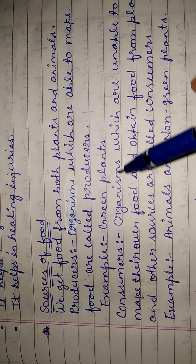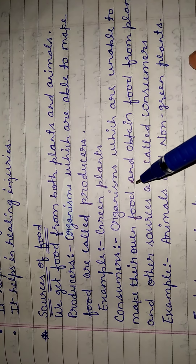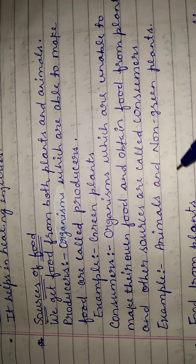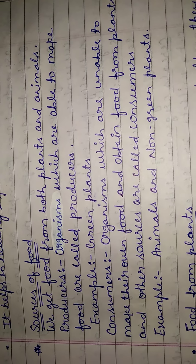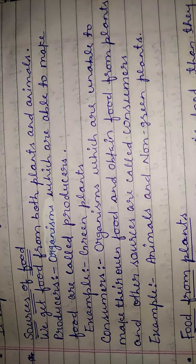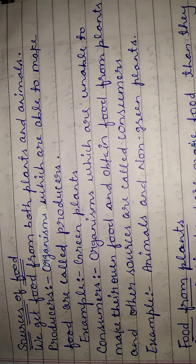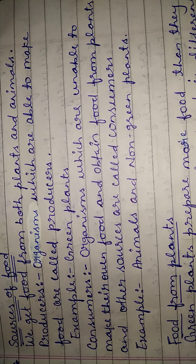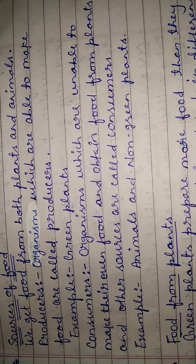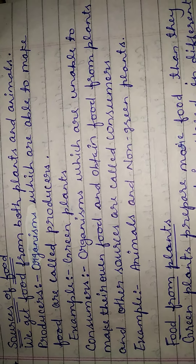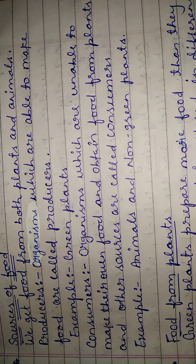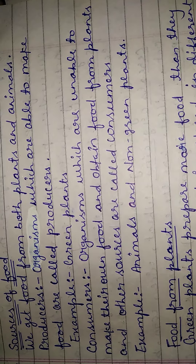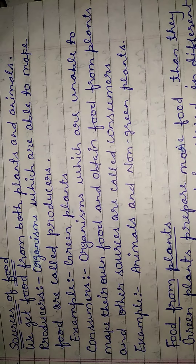Consumers are the organisms which are unable to make their own food and obtain food from plants and other sources. Consumers cannot perform the process of photosynthesis, so instead they depend upon plants or producers for their food. Examples of consumers are animals and some non-green plants.